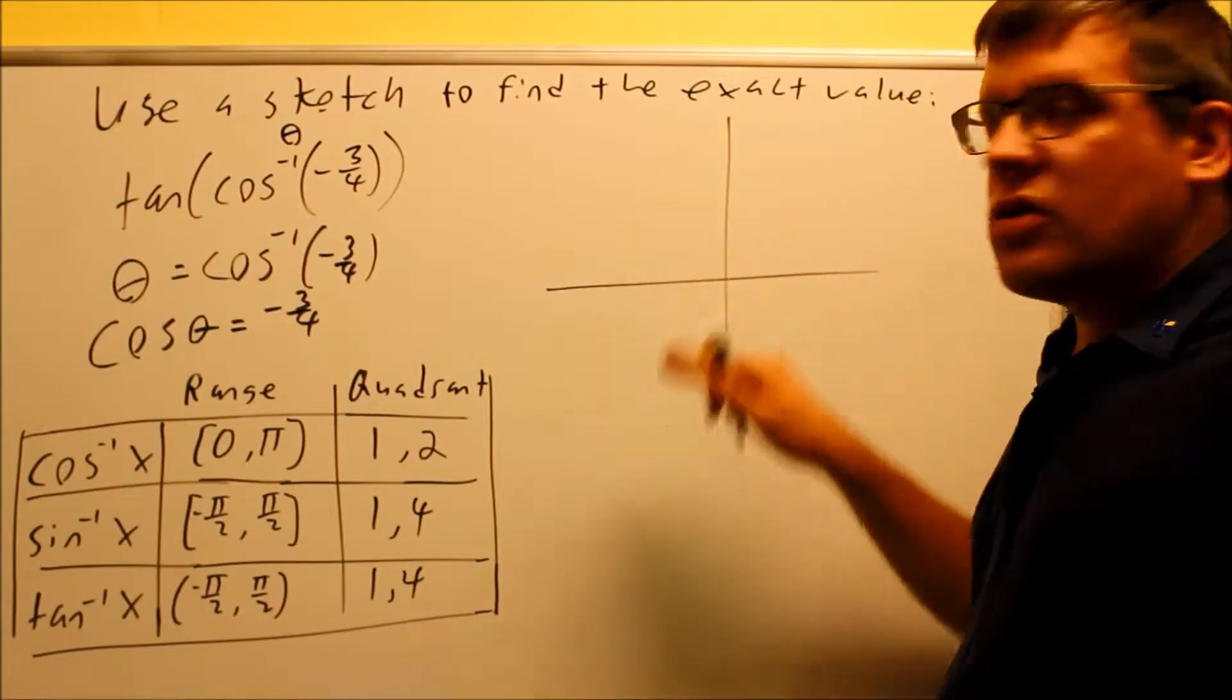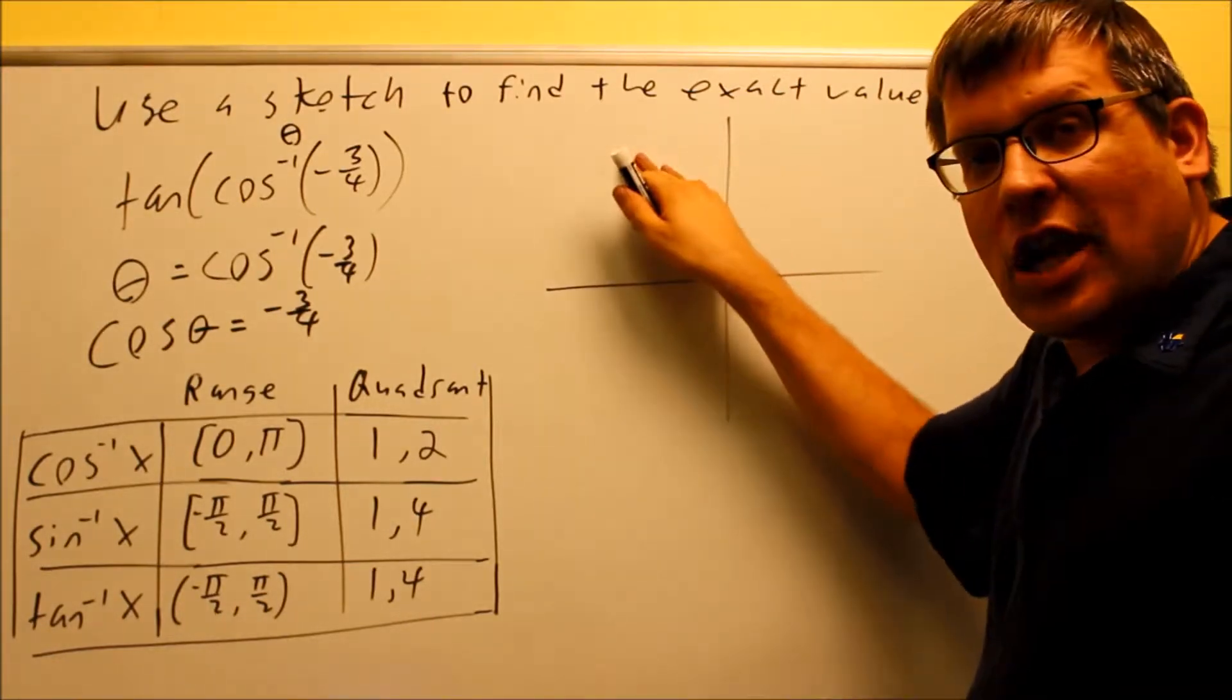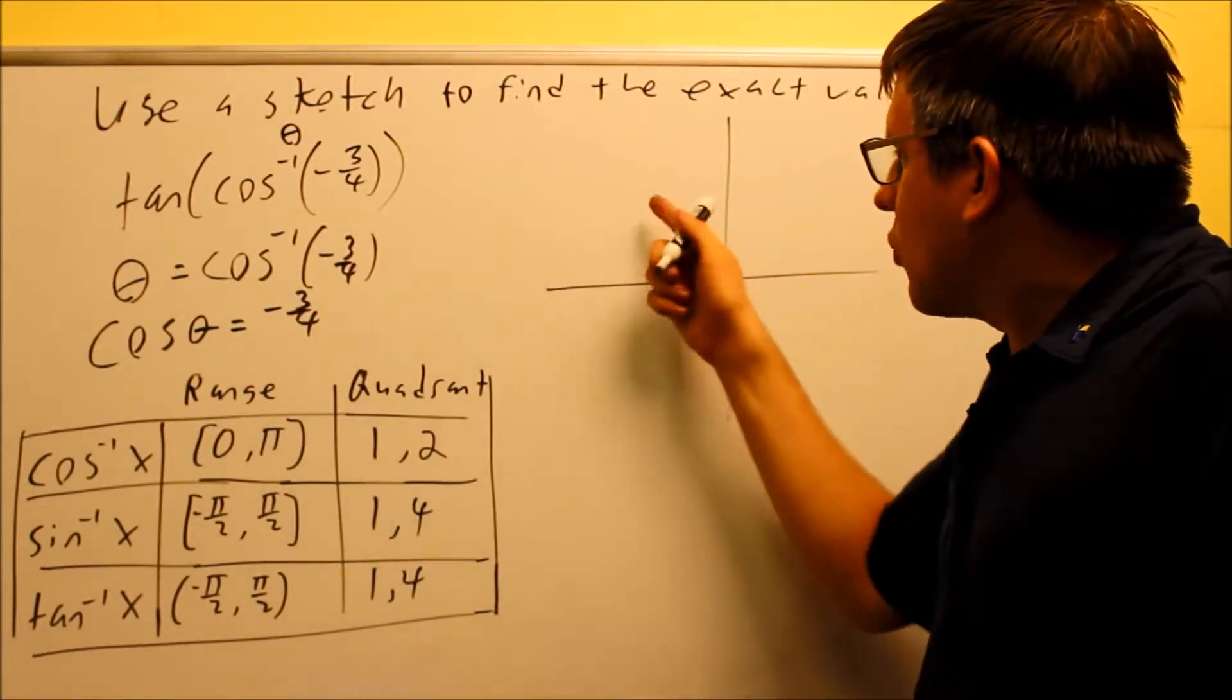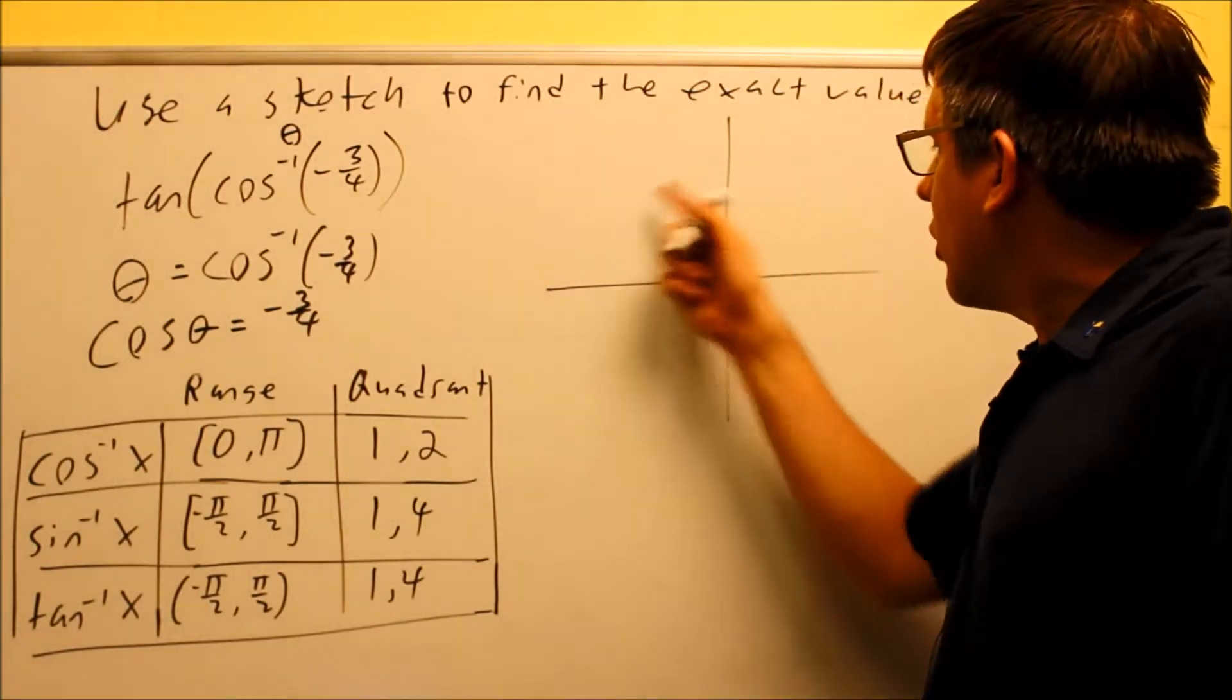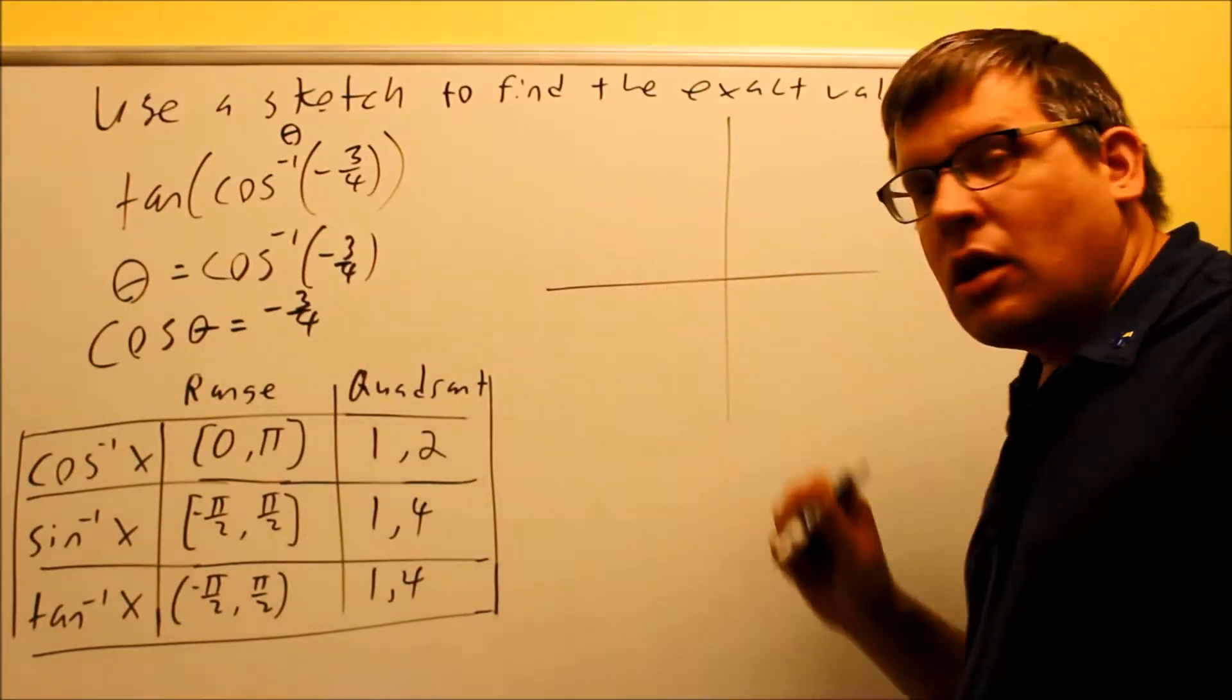Now if I do all students take calculus, all means everything's positive here. And then take, tangent's positive, everything else is going to be negative. This is the quadrant I want to use. I want to find out of quadrant number one and two, the only one where cosine could be negative is going to be in the second quadrant.